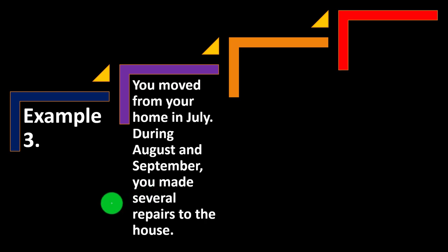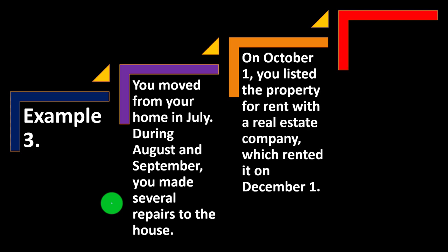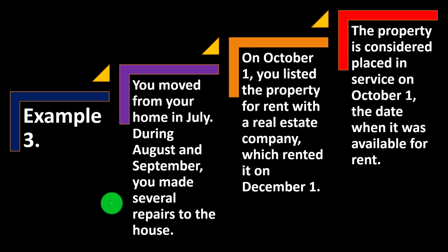Example number three: you moved from your home in July. During August and September, you made several repairs to the home. On October 1st, you listed the property for rent with a real estate company, which rented it on December 1st. The property is considered placed in service on October 1st, the date when it was available for rent — and that's when you can typically start the depreciation.